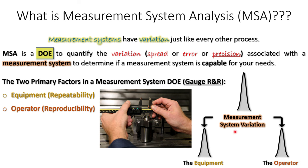The second factor we study in a gauge R&R is the variation that comes from the operators. Most, if not all, measurement systems we use today have some level of human interaction, and we quantify that in a gauge R&R using the concept called reproducibility. When your gauge R&R is done and it looks like your measurement system needs improvement, the gauge R&R process tells you what the source of variation is — is it your equipment or is it your operators?